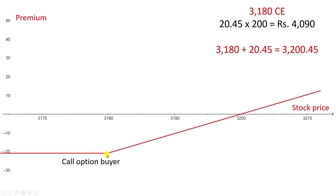Until 3180, I will be at a loss — I have paid the premium to the seller. When it starts to move above 3180, I will start earning back the premium that I had paid to the seller. And only when it moves above 3200.45 will I start earning my profit. This above the x-axis is my profit — profit of call option buyer.